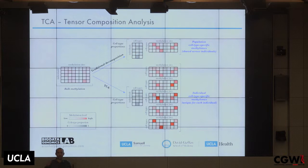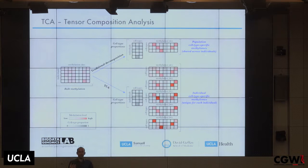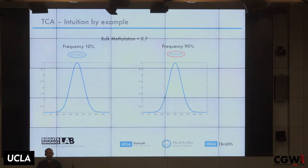You start with an N-by-sites input matrix and your output is much larger — individuals by cell types by sites. In a sense that seems impossible, because you're generating more information than you started with. But I'll give you an intuition for why it's actually potentially possible.